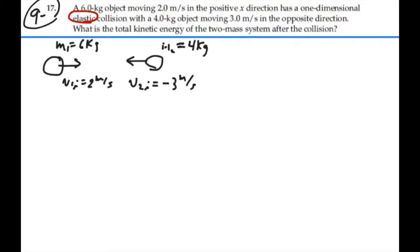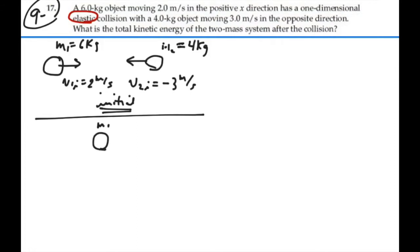So that's our initial velocities and that's what's going to happen initially. Afterwards they're going to collide elastically, not losing any energy. Most likely mass one will be moving in the negative x-direction with some V1 final, and mass two will be moving in the positive x-direction with some V2 final.